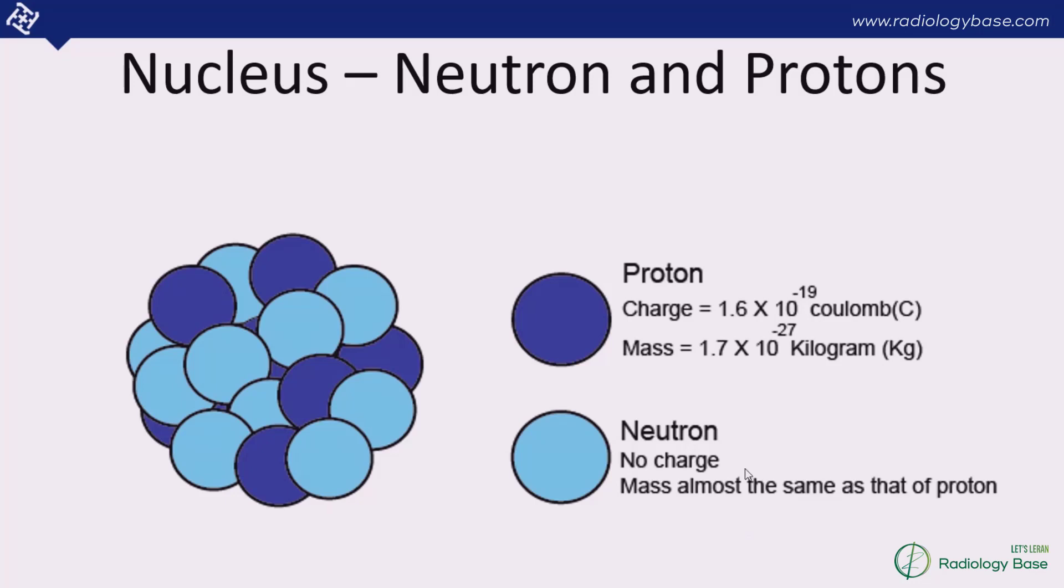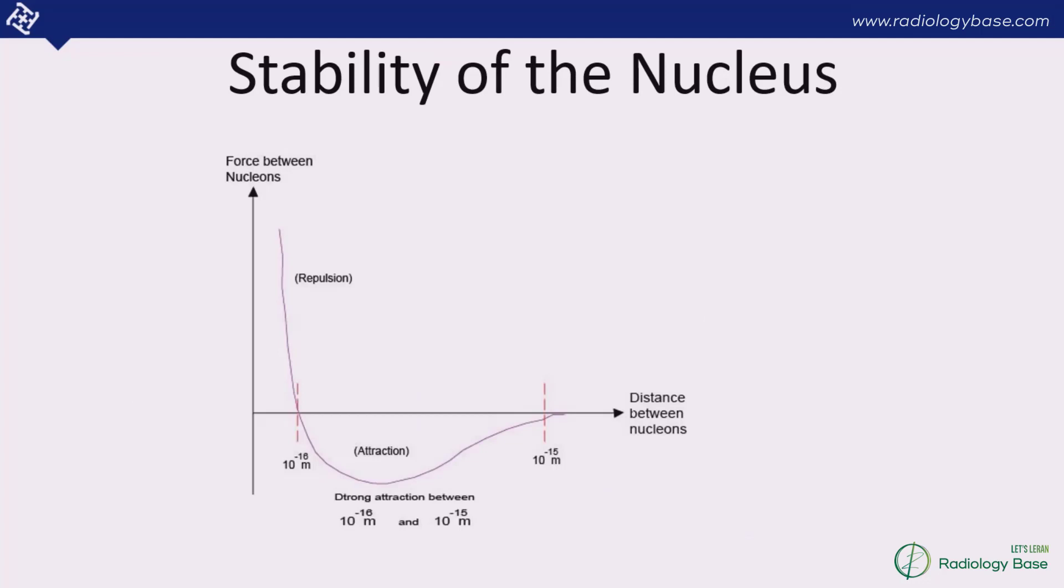I would like to discuss this graph which is important for the concept of how the nucleons are arranged in a nucleus, which are protons and neutrons. Remember in our last lecture we discussed the strong nuclear force or strong interaction. At 10^-15 meters, when the nucleons are relatively less distance than this value, they have a very strong force of attraction which pulls them to each other.